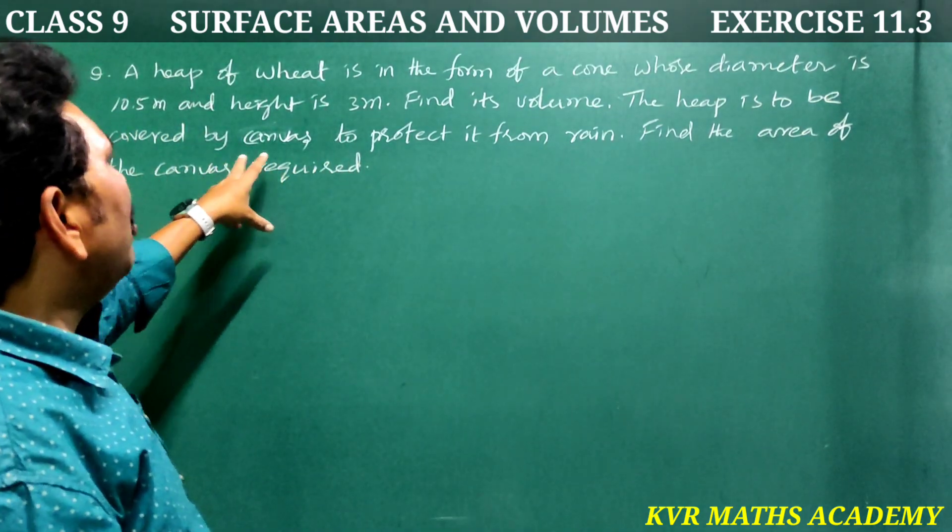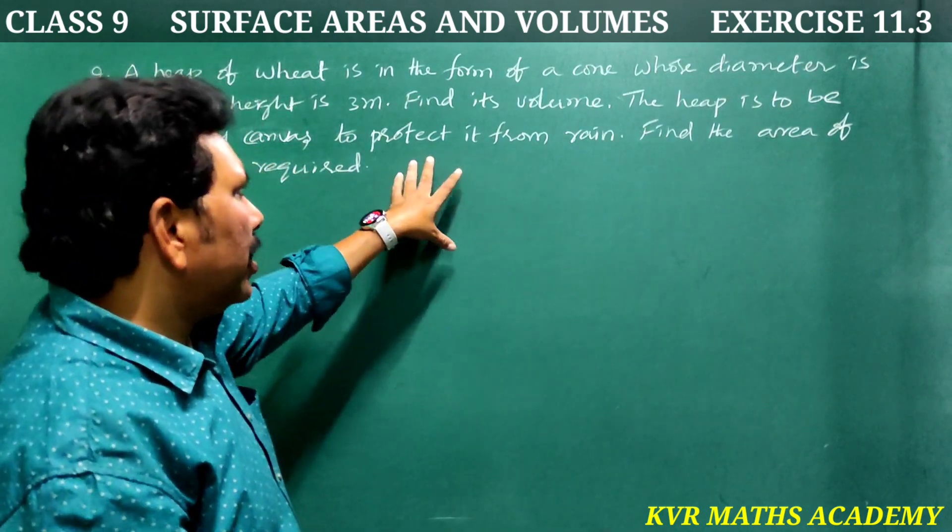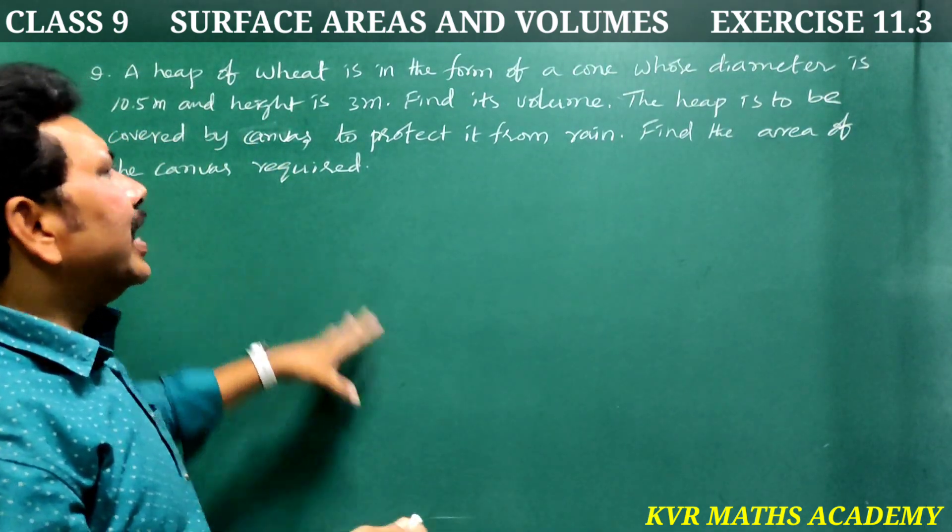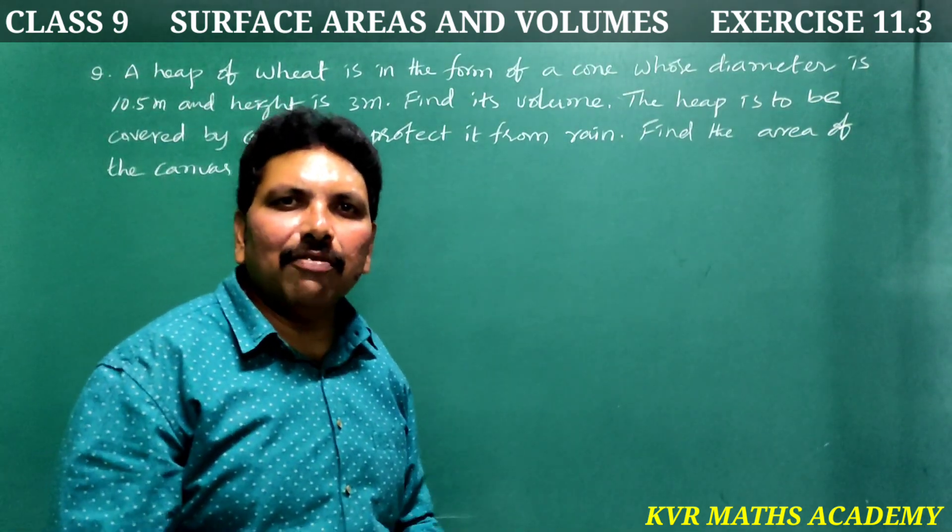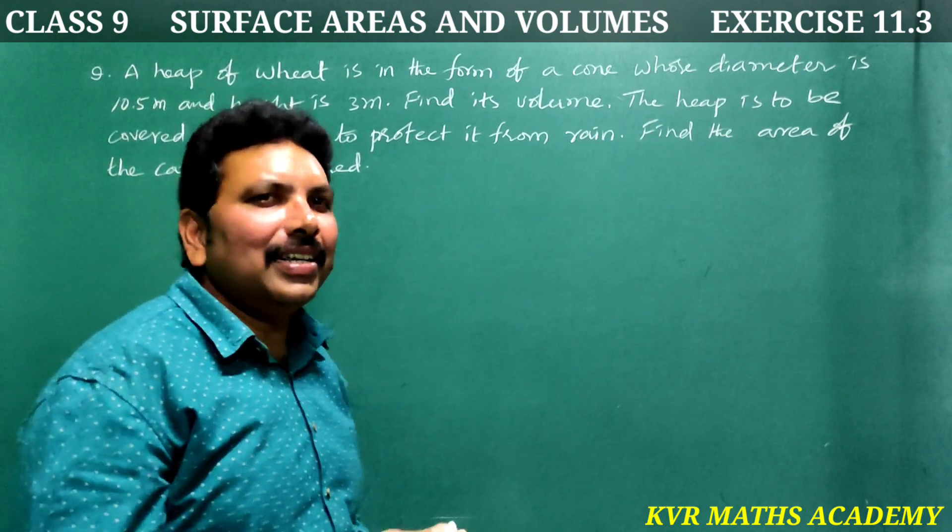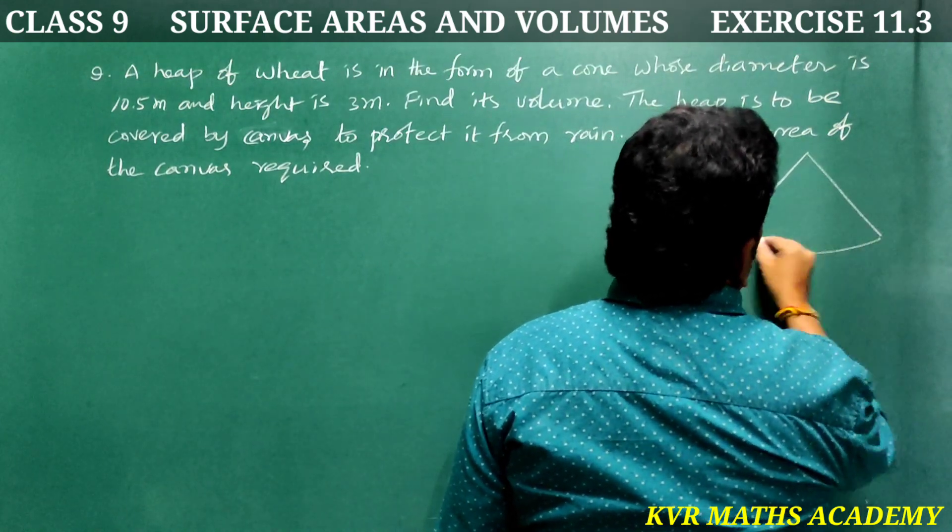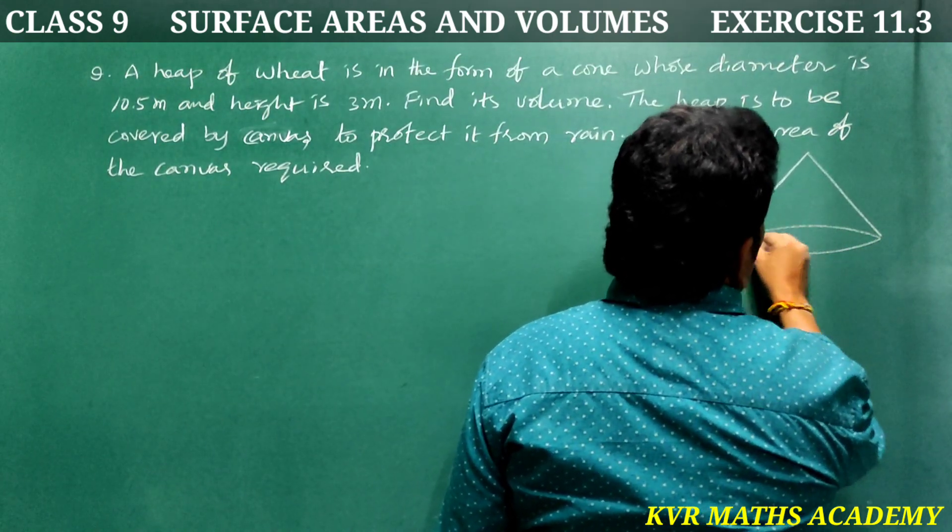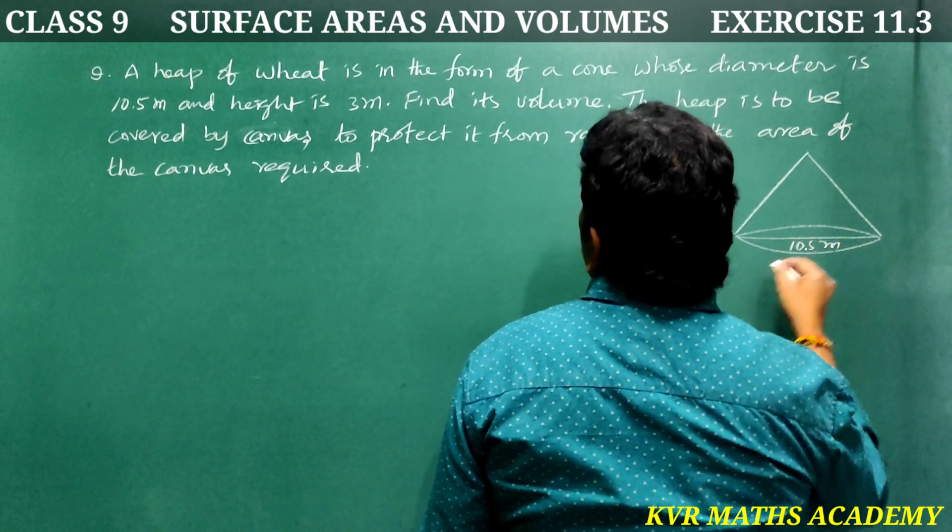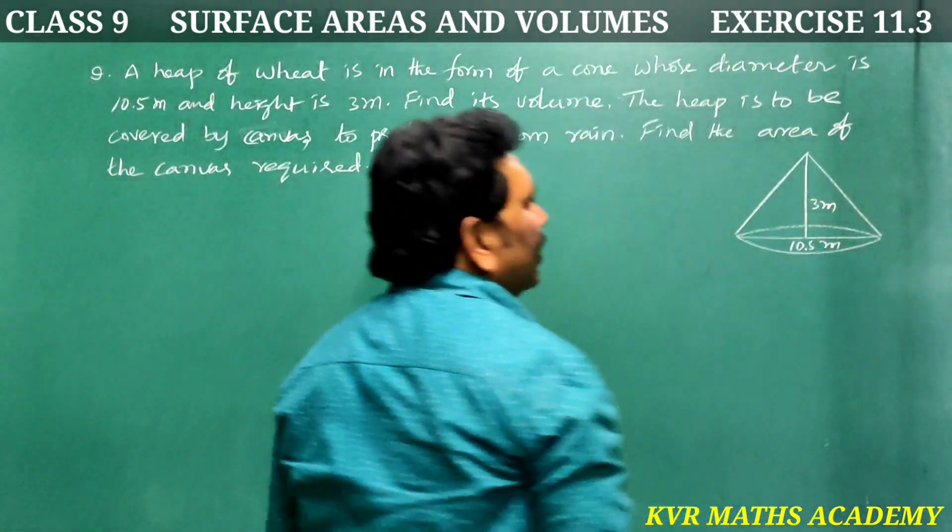A heap of wheat is in the form of a cone with diameter 10.5 meters and height 3 meters. We need to find the volume and the area of canvas required, which is the curved surface area. Let us find the solution.